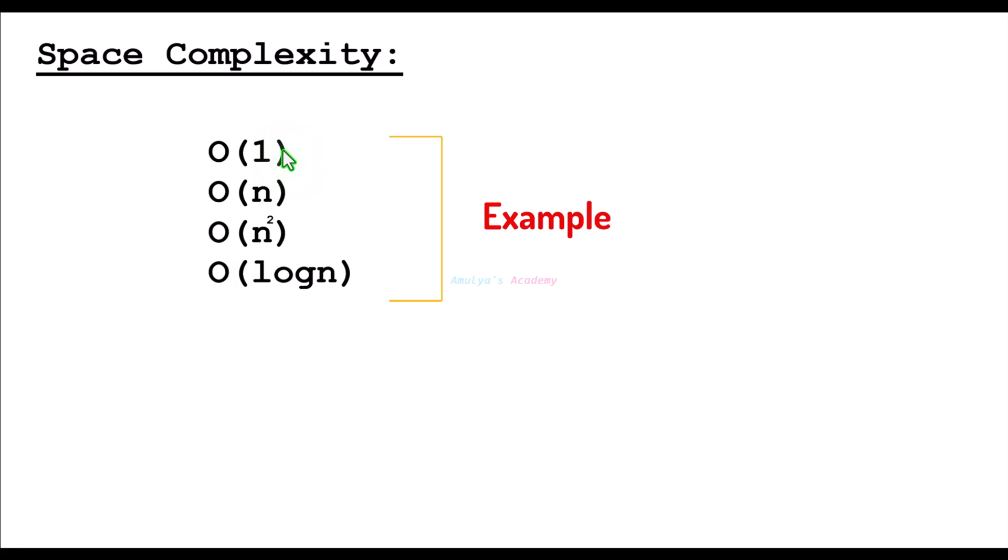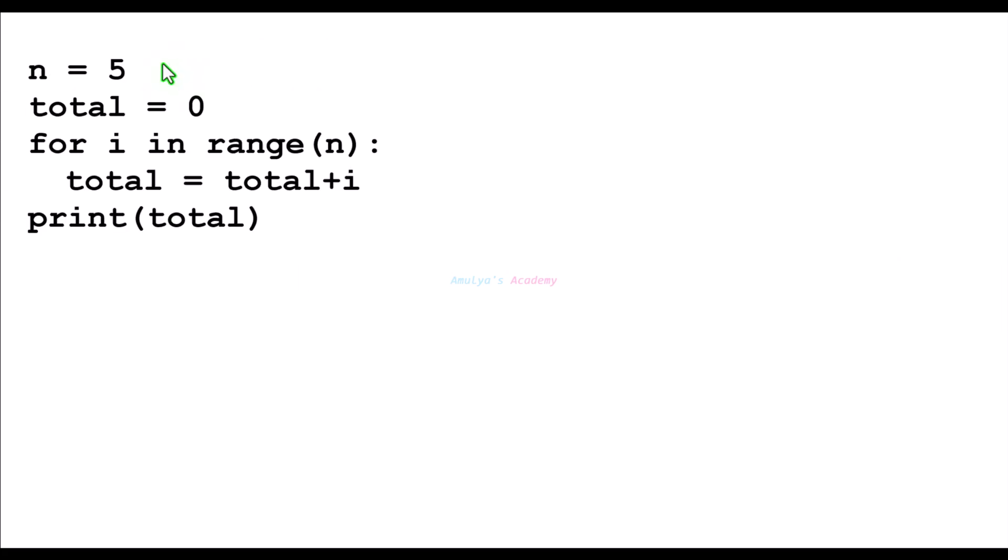It is constant space, linear space, quadratic space, and logarithmic space. Okay, so this is about space complexity. Next, let's take an example, a simple program. Here we have our program, and let's calculate the time complexity and space complexity of this program.